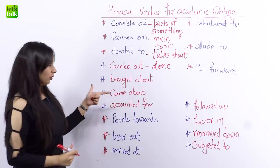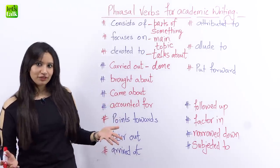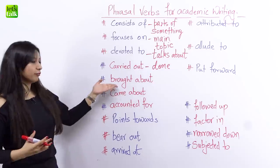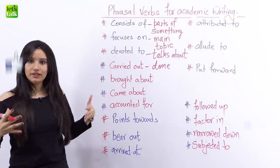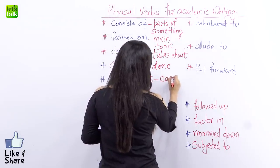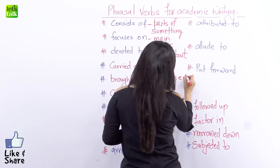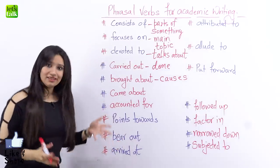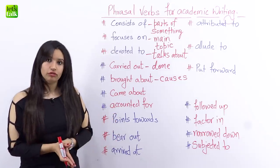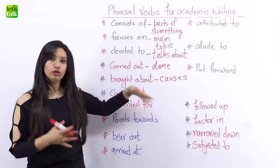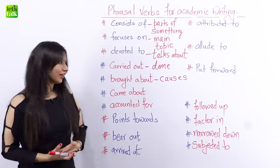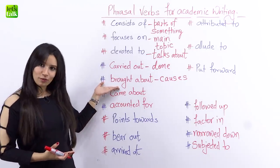Another thing that you often talk about is causes. Whenever you write a report, you surely talk about what led to what — so you're talking about causes. 'Brought about' means caused. When something causes another thing, you use 'brought about.' So you could say that the recent food shortages brought about a drastic change in the economic situation of the country, which means that it caused a drastic change in the economic situation of the country.